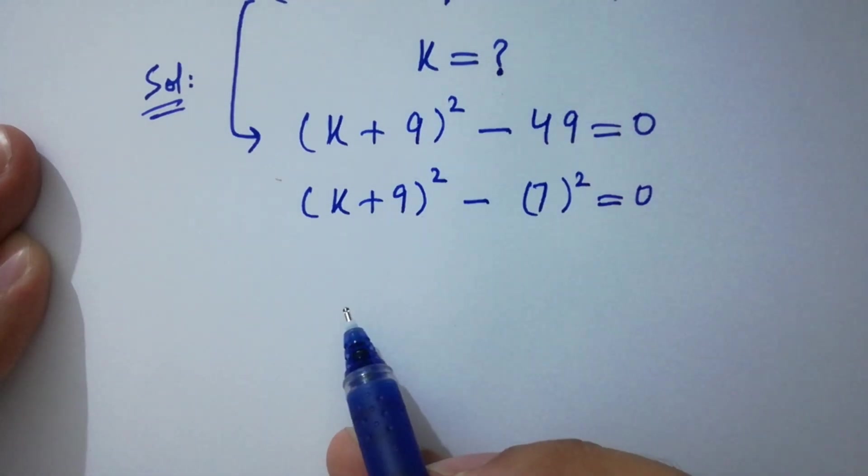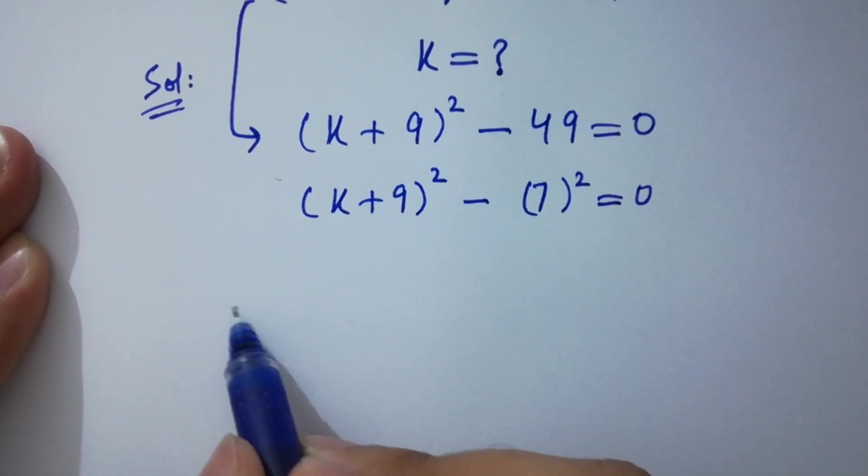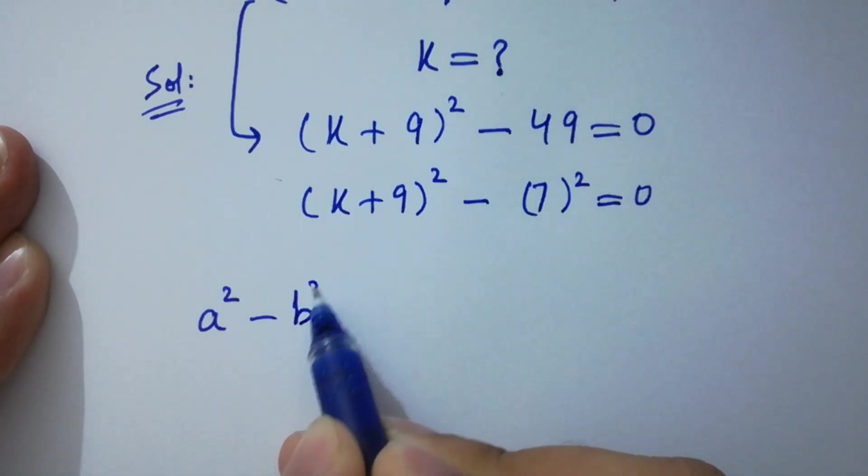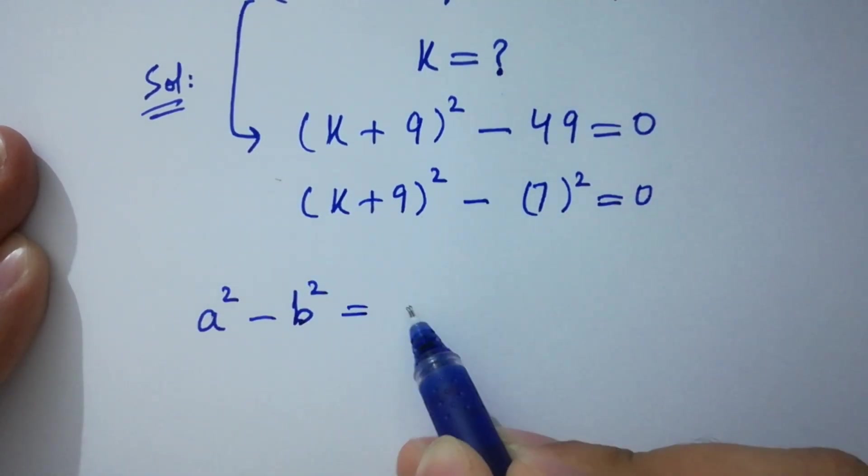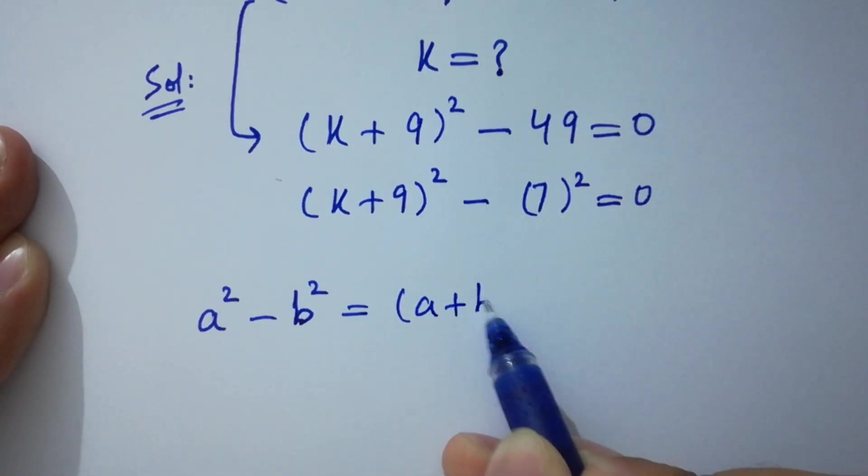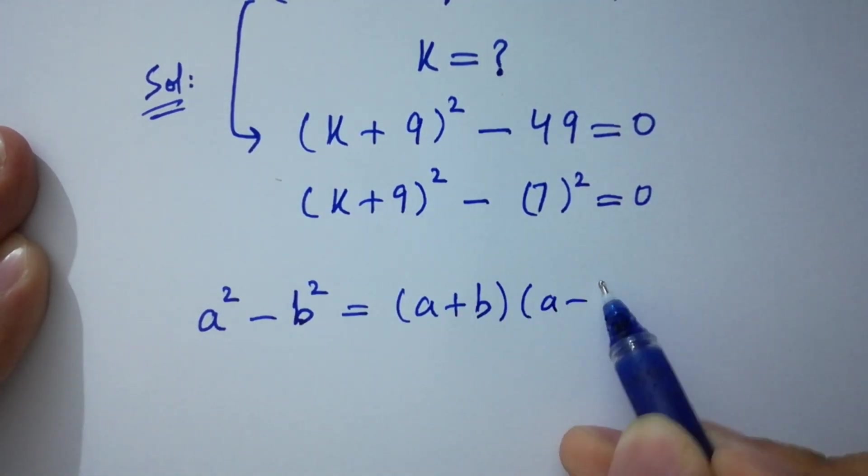By this, we know the formula of a² - b² which is equal to (a + b)(a - b).